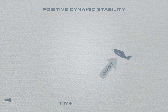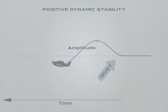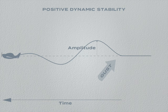When disturbed by a gust of wind, positive dynamic stability is the tendency of the aeroplane to return to its original attitude after a number of decreasing oscillations. The aeroplane's nose pitches beyond its original attitude in each oscillation, but decreases in amplitude until it settles.